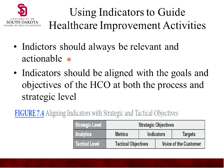Using indicators to guide healthcare improvement activities: indicators should always be relevant and actionable. Don't count the pigeons on the roof if you can't do anything about it. They should have some critical effect on your organization and be aligned with the goals and objectives of the healthcare organization at both the process level and the strategic level.